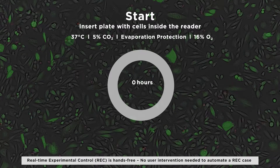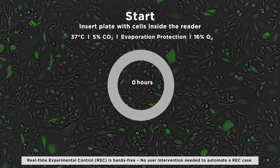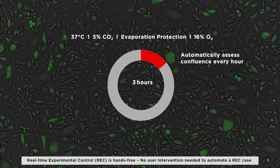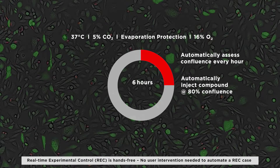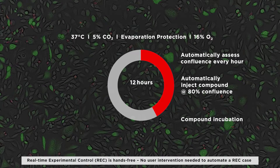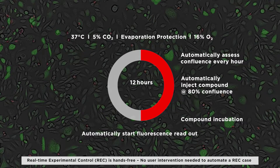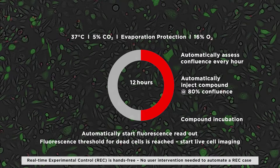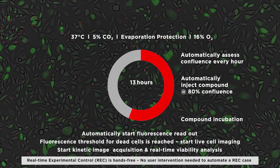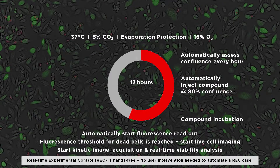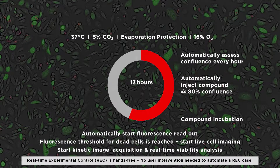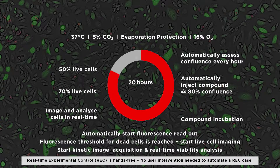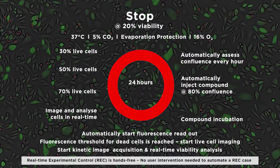To start, insert plate with cells inside the reader, assess confluence, inject compound, incubate compound, start fluorescence readout, start live cell imaging, start kinetic image acquisition and real-time viability analysis, image and analyze cells in real time, and finish when 30% live cells is reached.